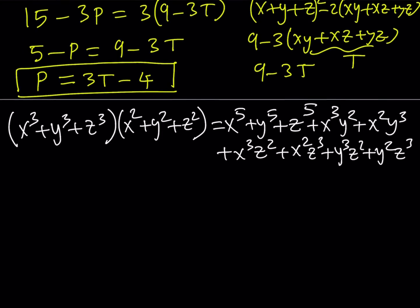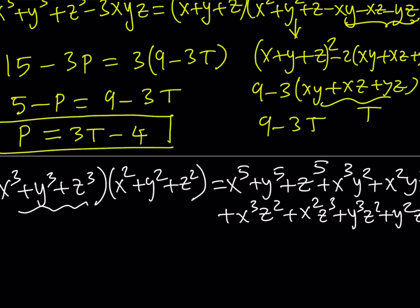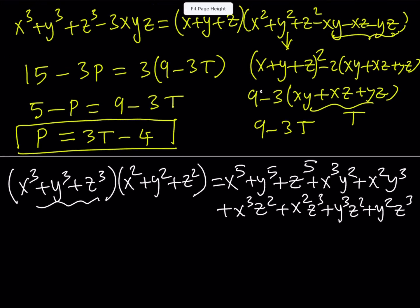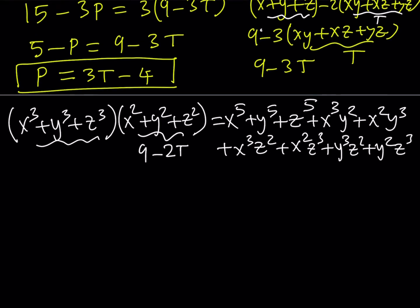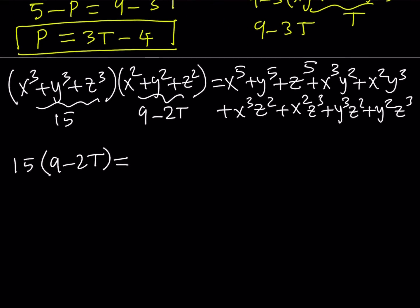So we're going to simplify this expression. I do know that the sum of cubes is equal to 15. For the sum of squares, we found it earlier — it equals (x plus y plus z) squared minus 2t, which is 9 minus 2t. We know the sum of cubes is 15, so we get: 15 multiplied by (9 minus 2t) equals 83 plus the remaining terms.